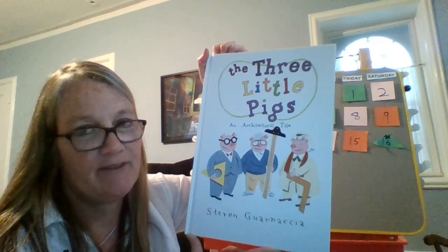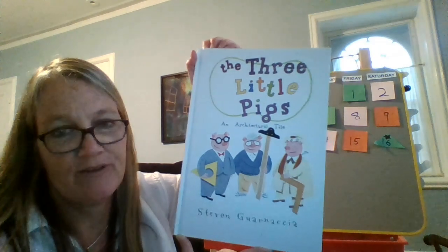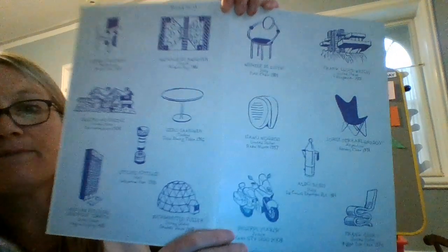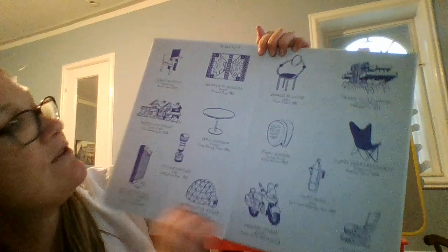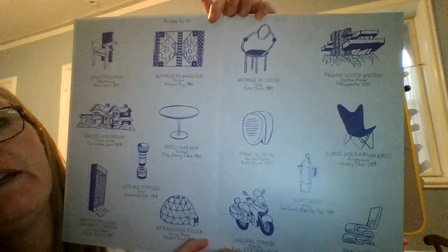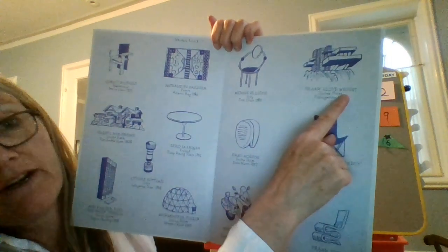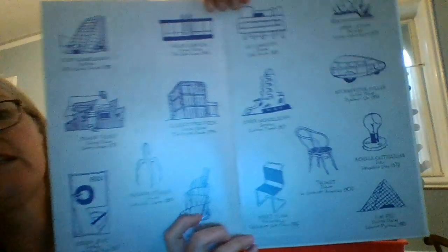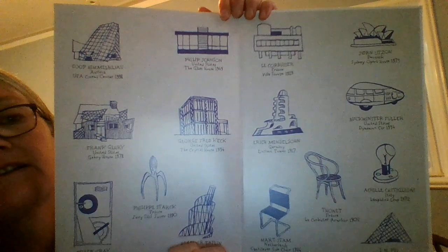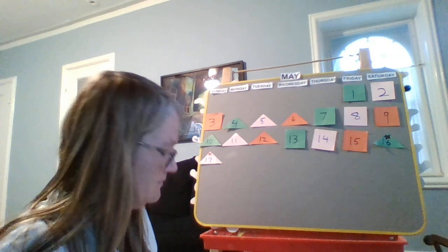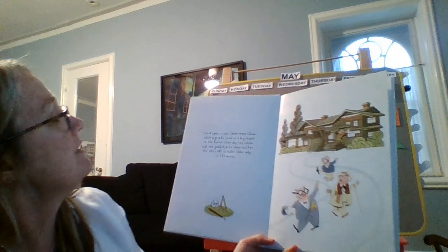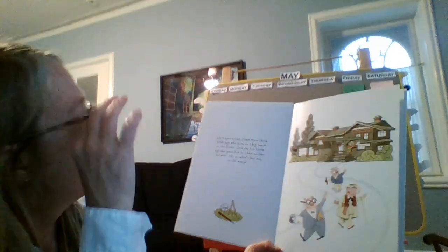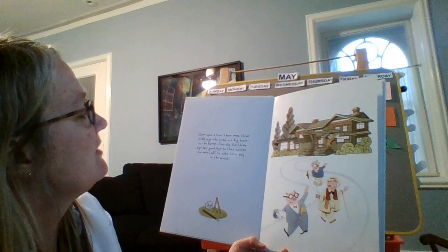Maybe somebody's going to have to send me a note and remind me what the name of our other town was. And in this book, when you open the front, there are really interesting pictures of real houses that real architects designed, and real furniture pieces that real architects designed — and on the back cover too. All of these pictures on the front and back cover appear in this story somewhere. Once upon a time, there were three little pigs who lived in a big house in the forest. One day, the three pigs said goodbye to their mother and went off to make their way in the world.